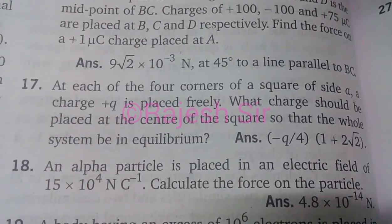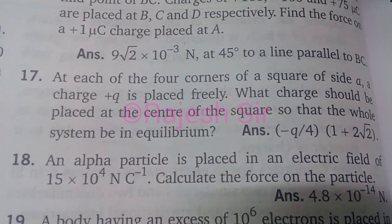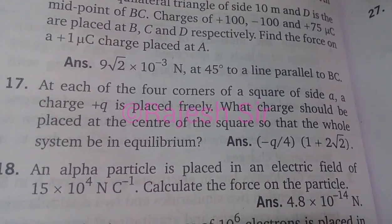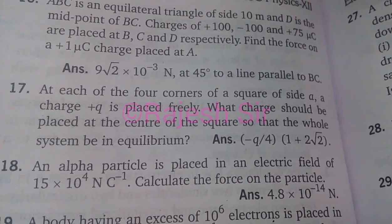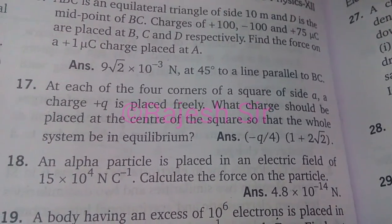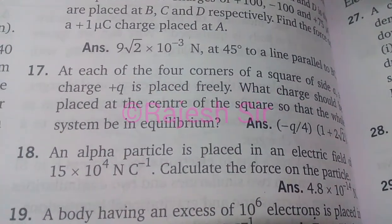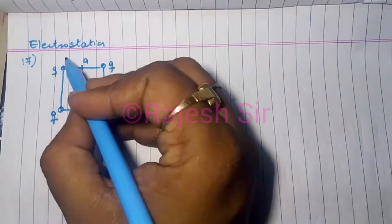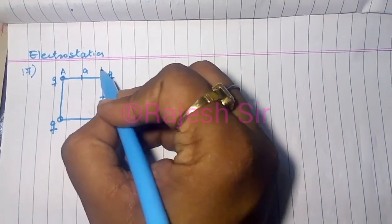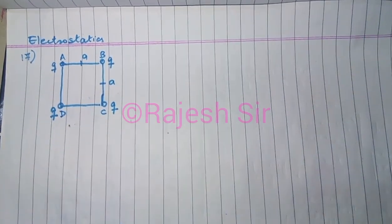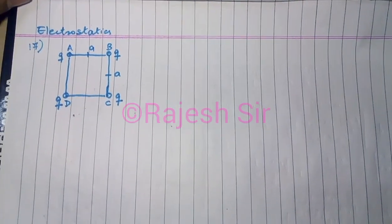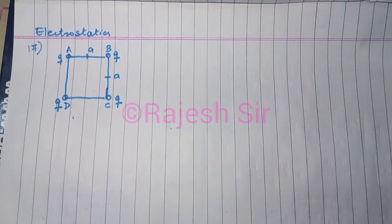We are discussing problem number 17: at each of the four corners of a square of side a, a charge q is placed. What charge should be placed at the center of the square so that the whole system is in equilibrium? In this diagram, I have placed four charges q, q, q, and q at the corners of square ABCD.